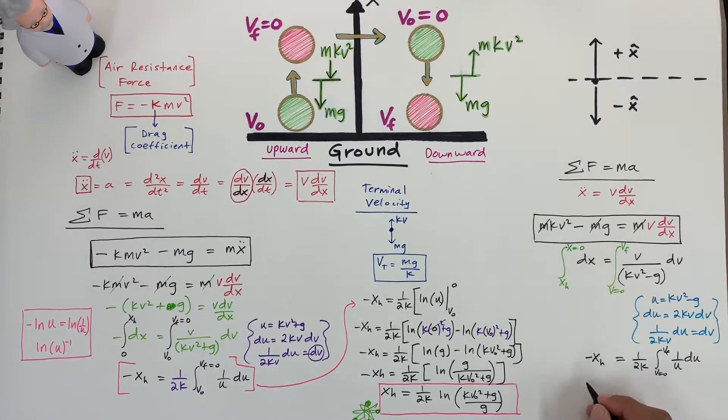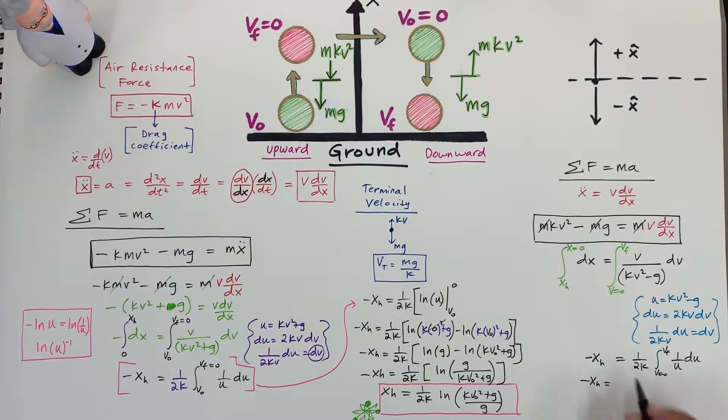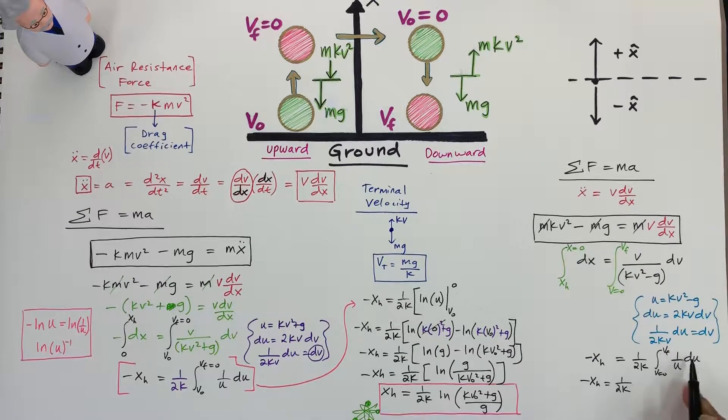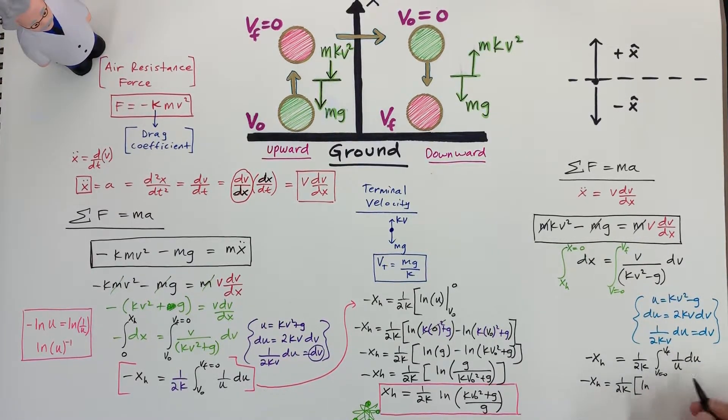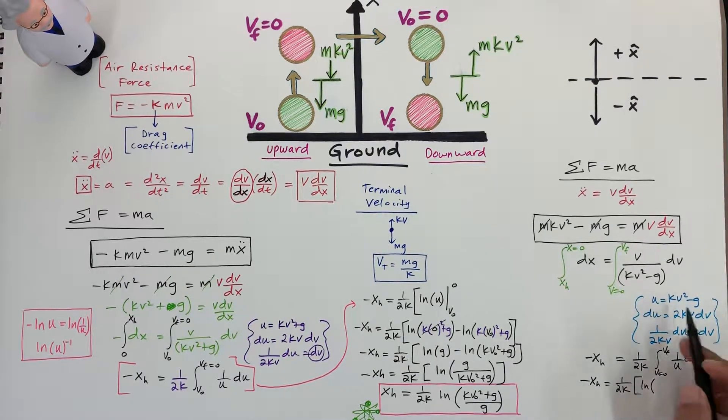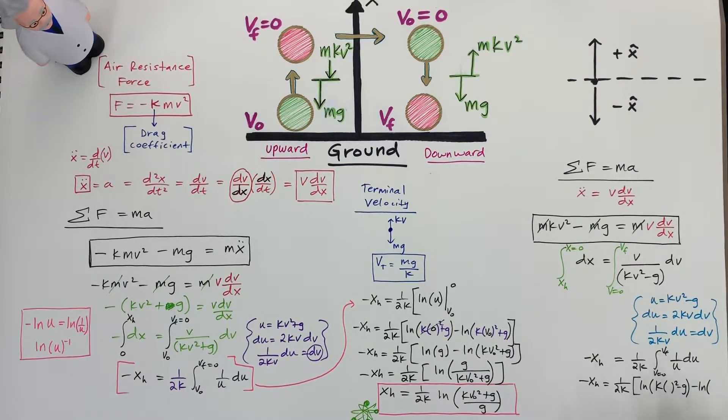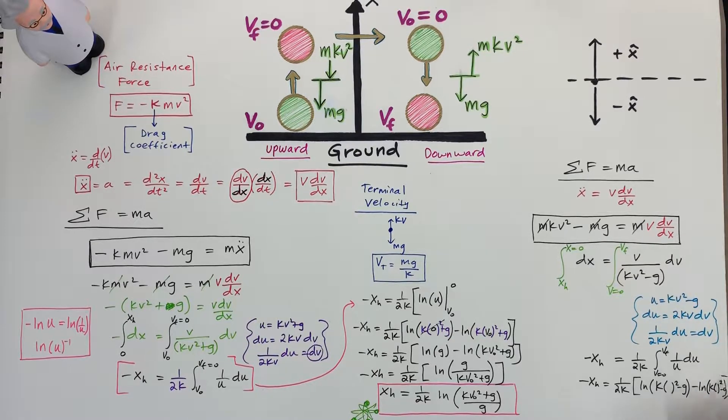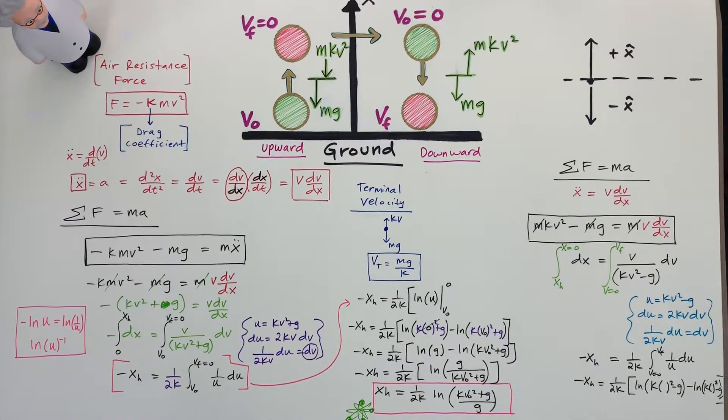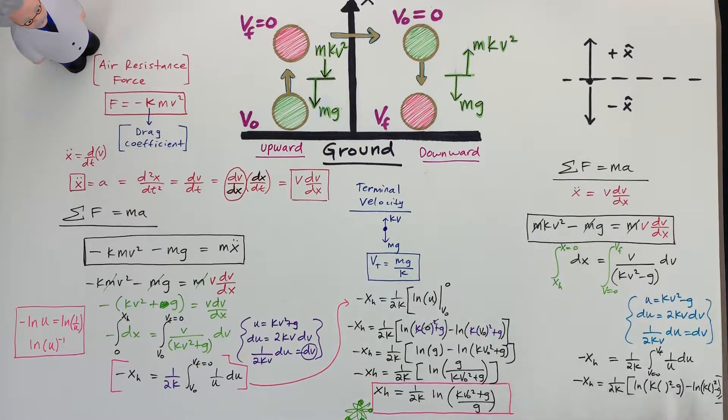We're going to have minus x_h times 1 over 2 k. Here we have ln of u. But we know that u is this. So we have k, I'm going to leave an opening where the v goes. This is final minus ln of k parentheses squared minus g. Running out of room here. Let's get that final term or maybe close to the final term in there.